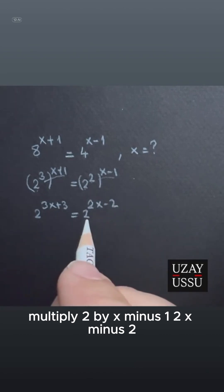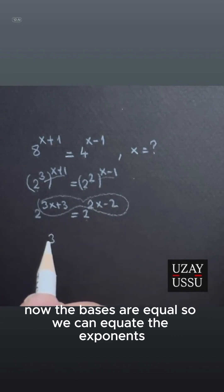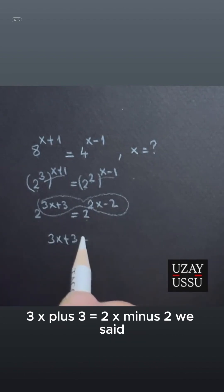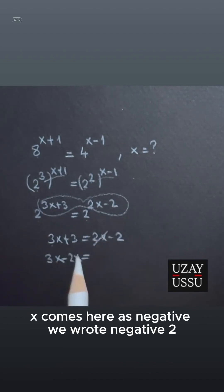Now the bases are equal, so we can equate the exponents. 3x plus 3 equals 2x minus 2. We write the equality, we wrote 3x, 2x comes here as negative.